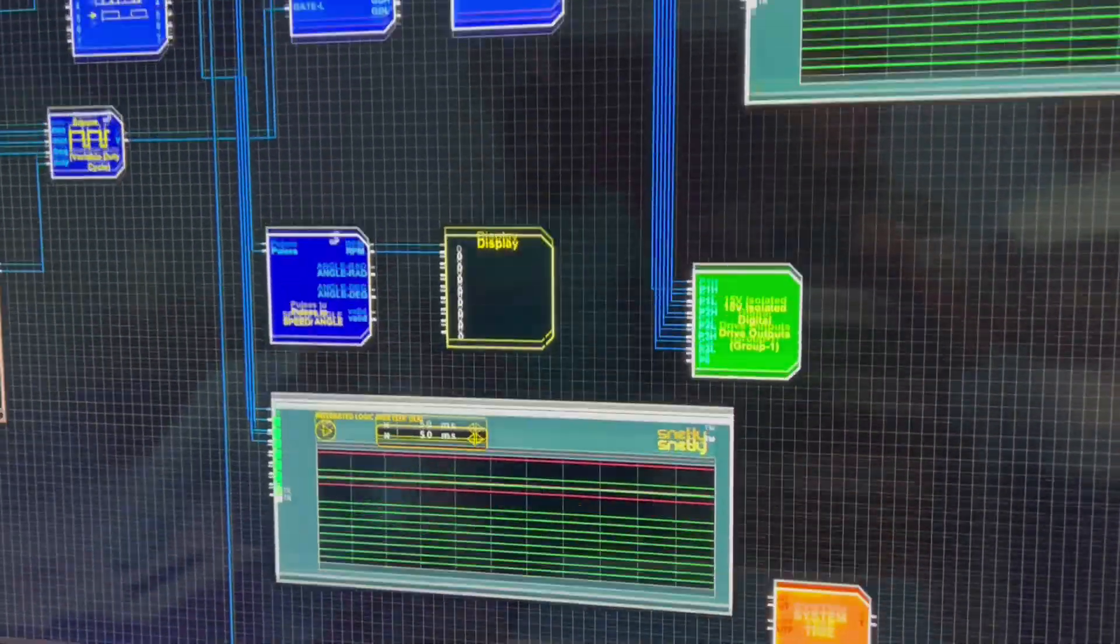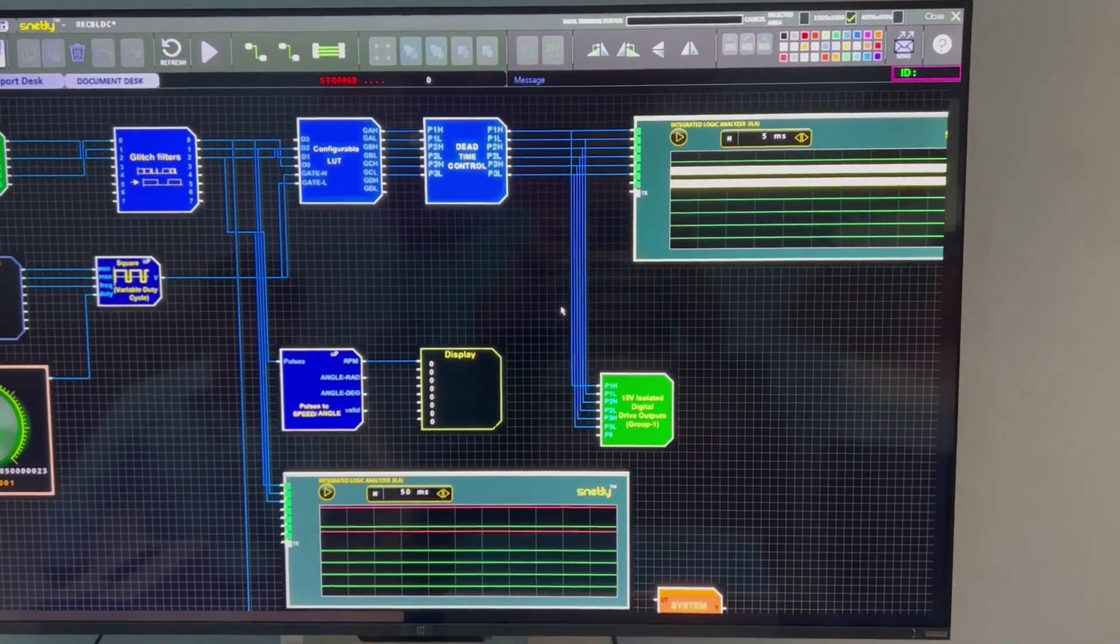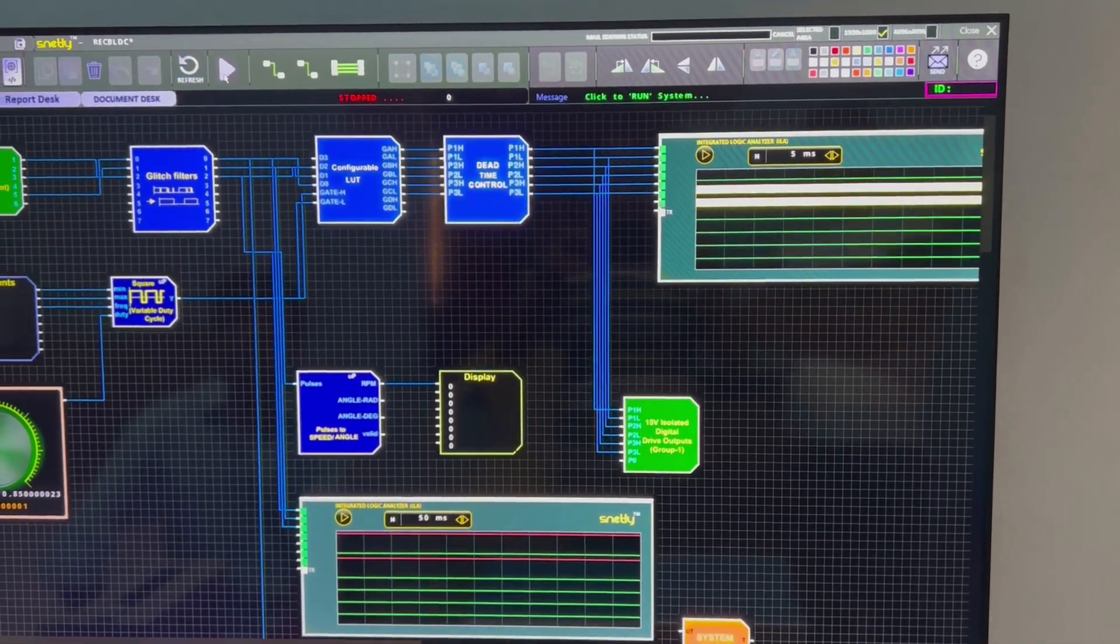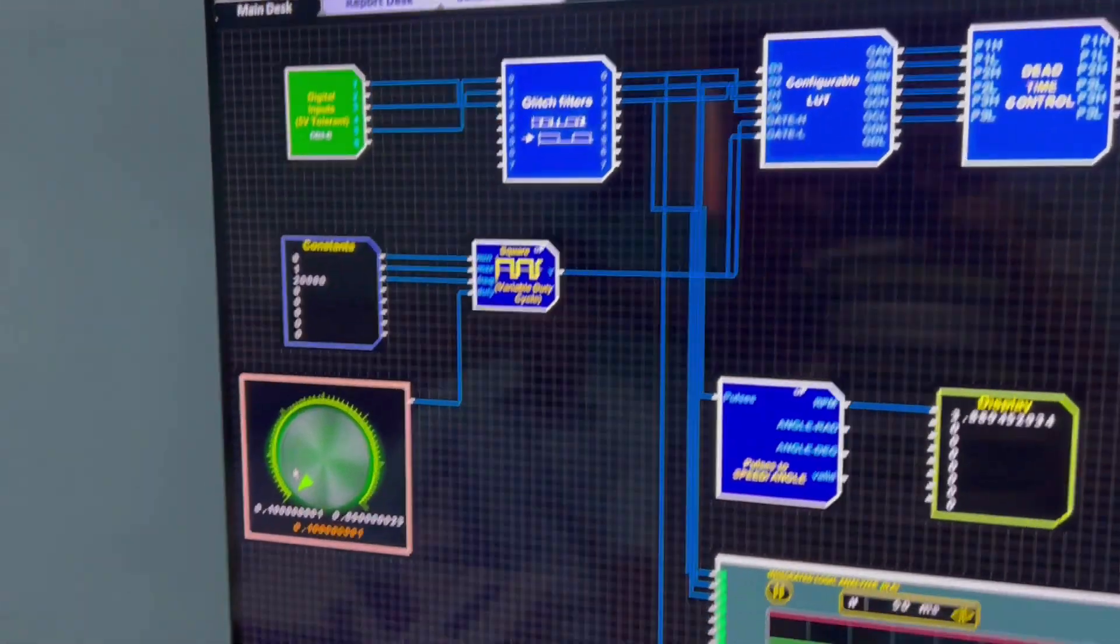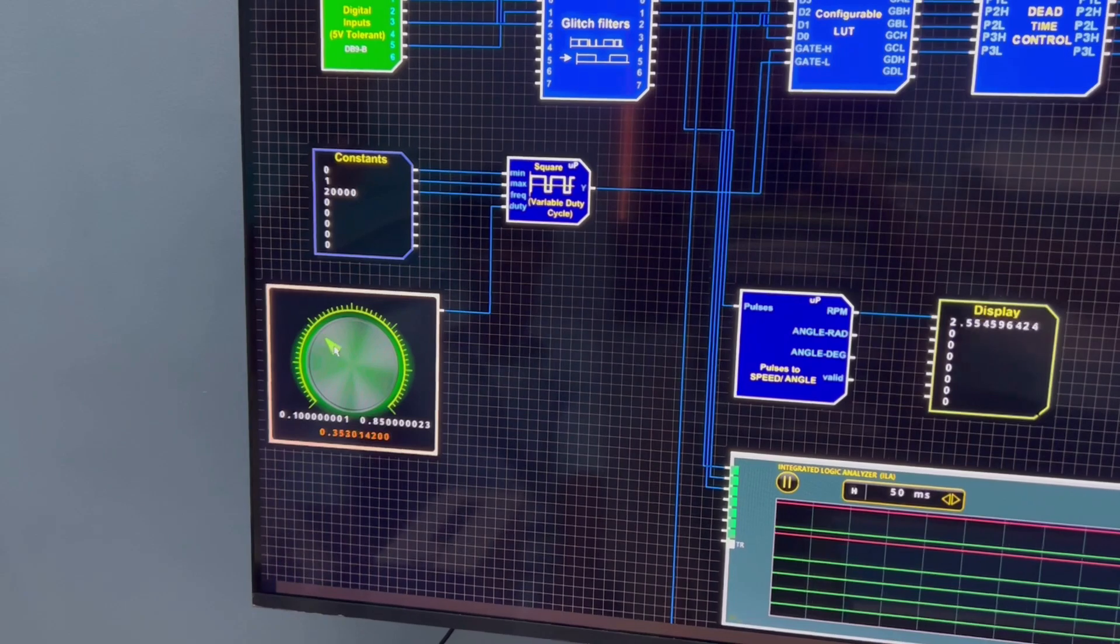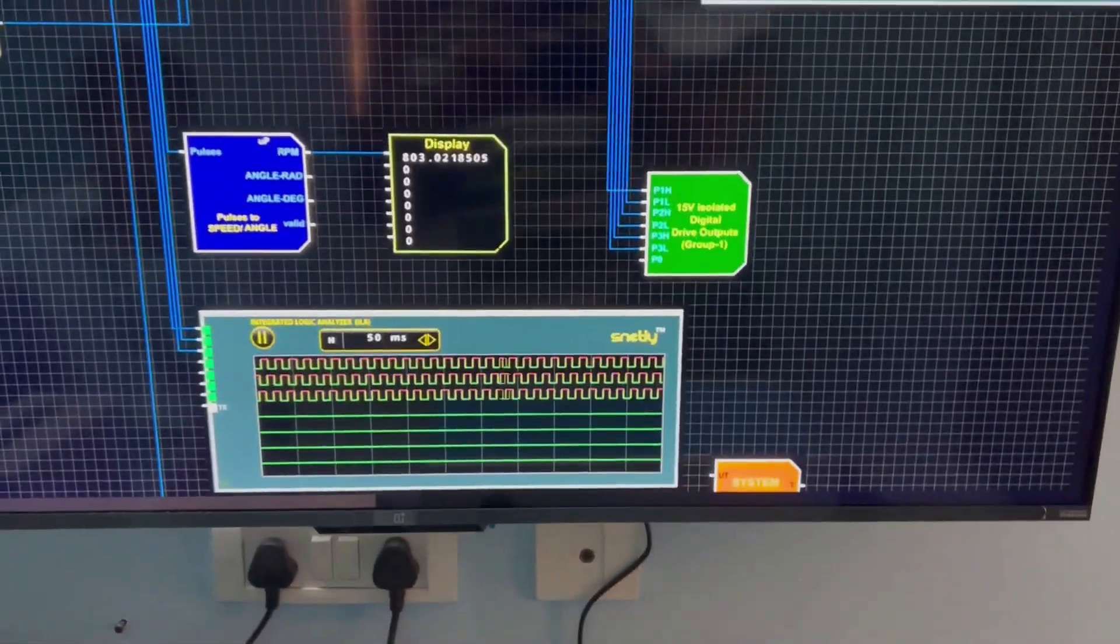After creating a model level design, you can directly connect to your hardware and then click on the run button. By simply varying the duty cycle control, you can observe your motor starts running.